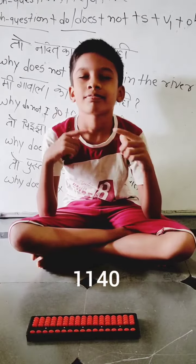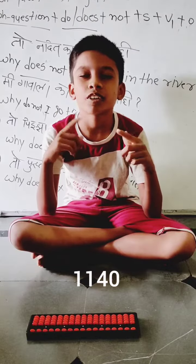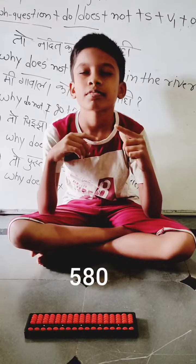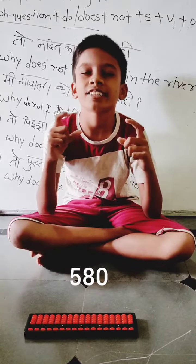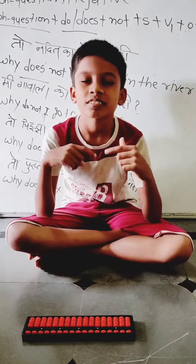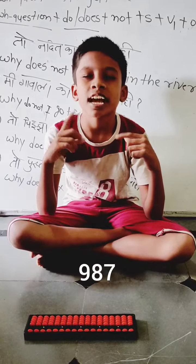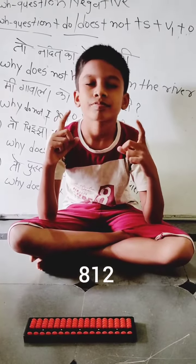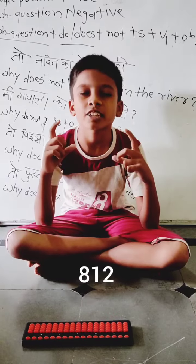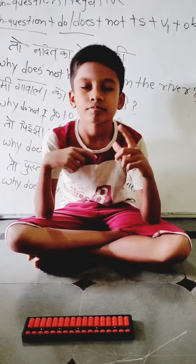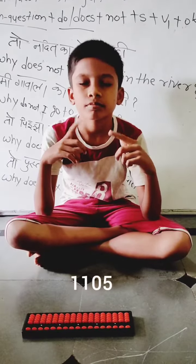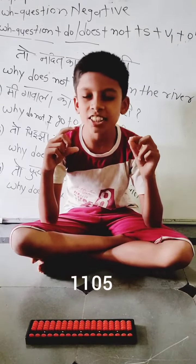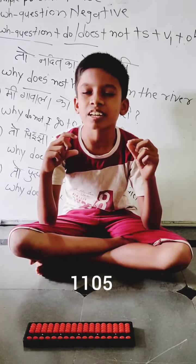228 x 5 = 1140. 145 x 4 = 580. 329 x 3 = 987. 406 x 2 = 812. 421 x 5 = 1105.